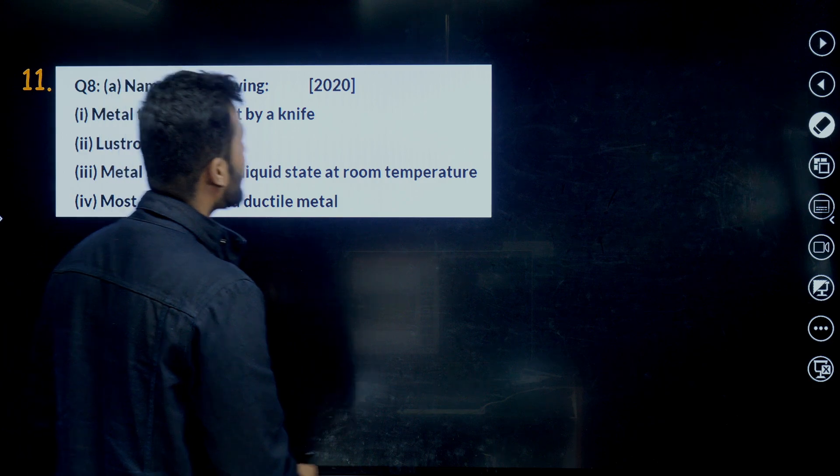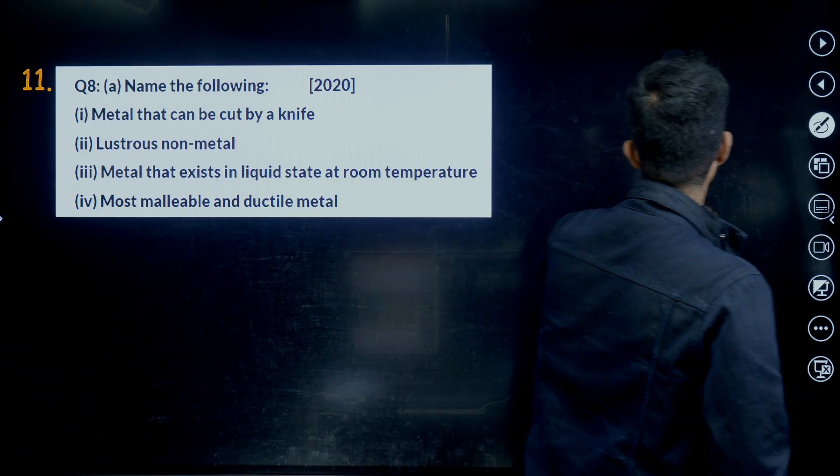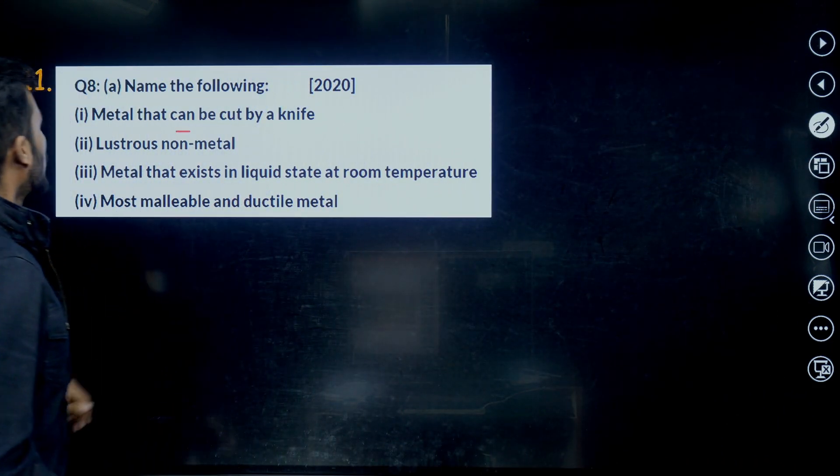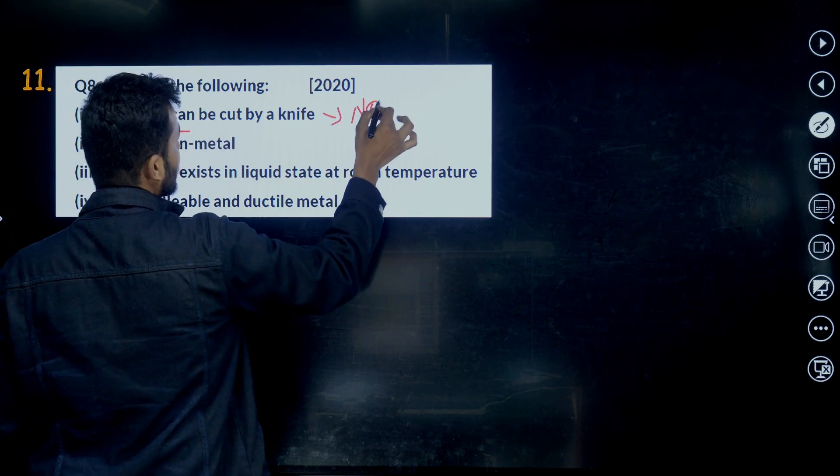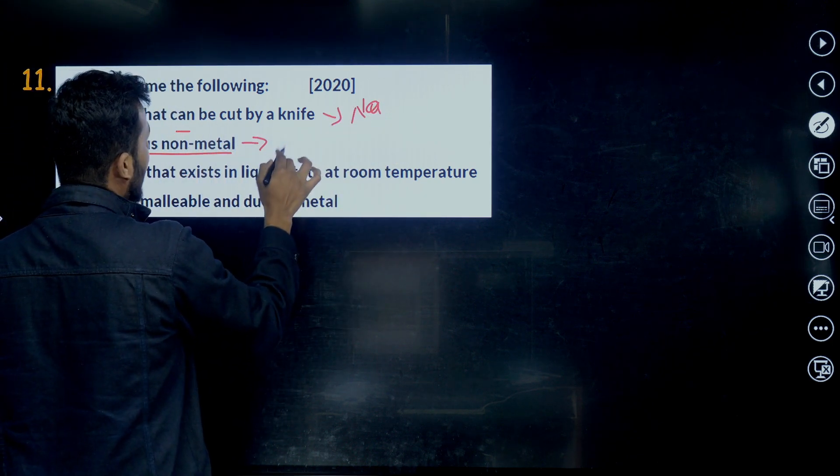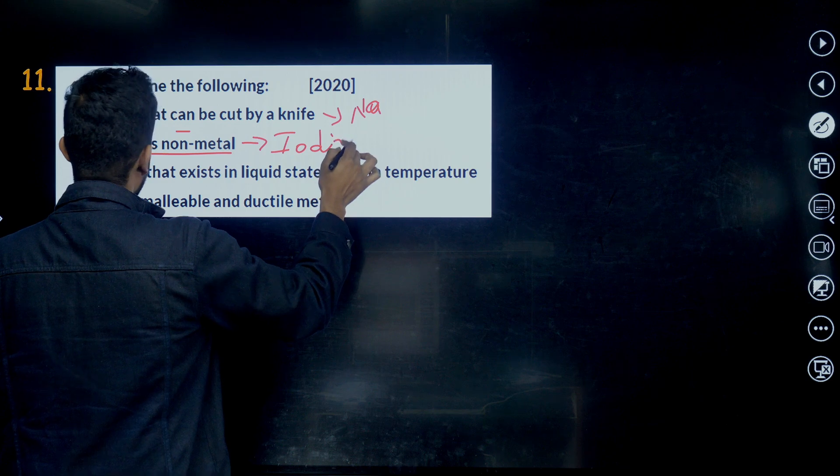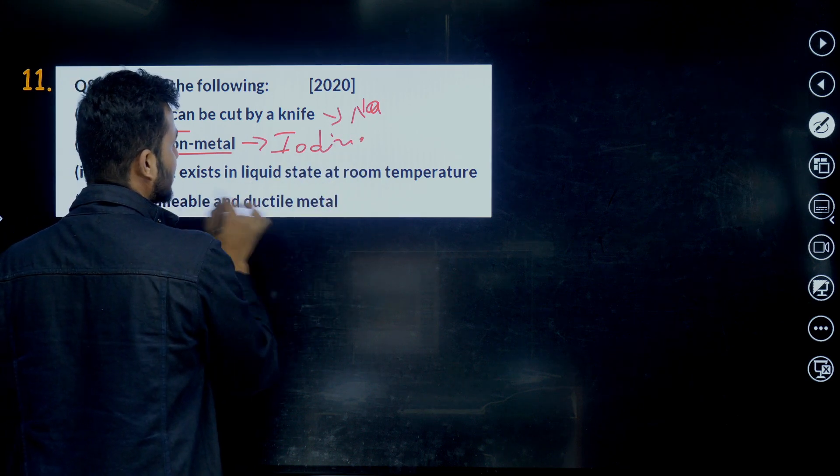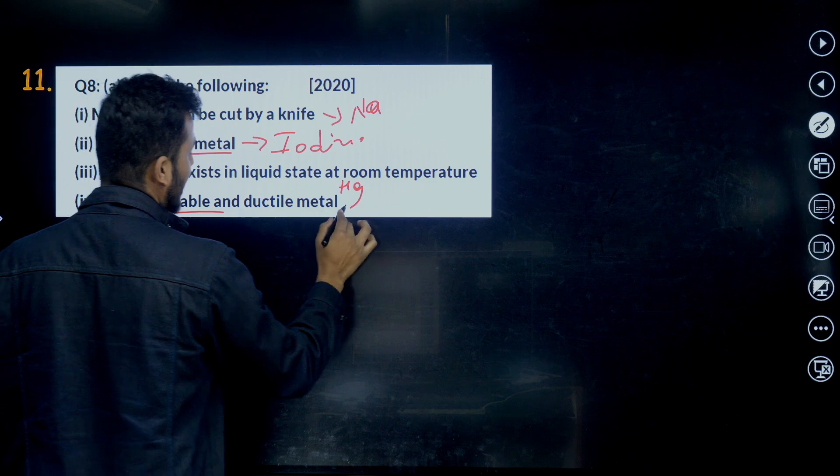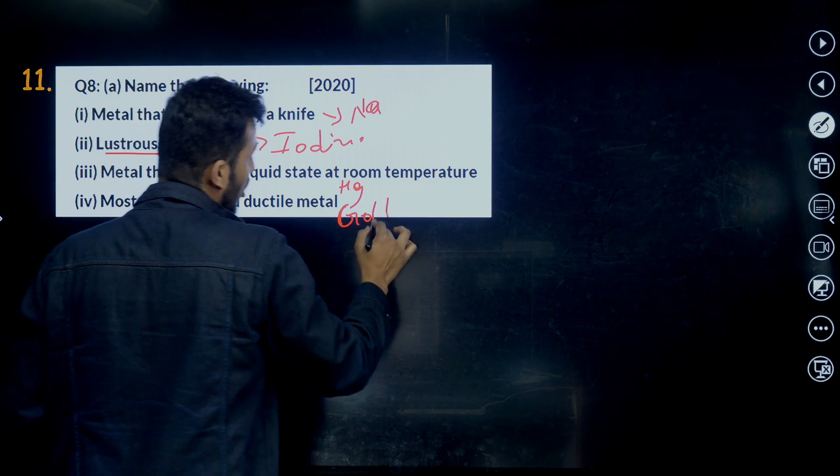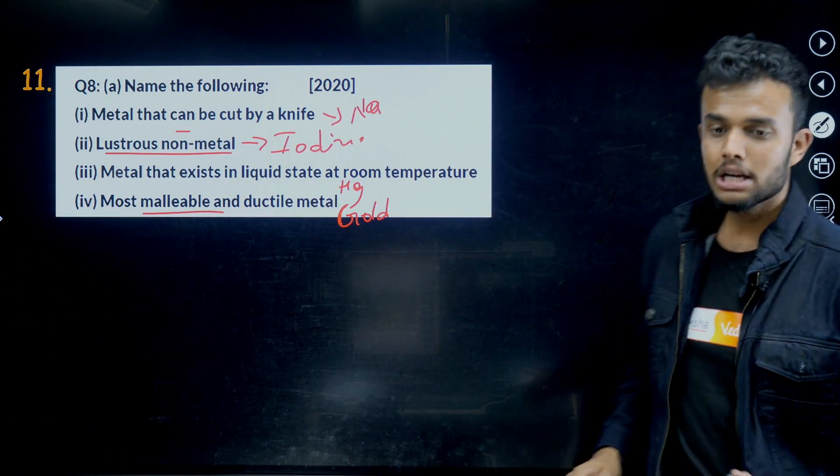Name the following. Come on, fast. Name the following. Metal that can be cut by knife - sodium metal, sodium, lithium. Lustrous non-metal - iodine. Metal that exists in liquid state at room temperature - mercury. Most malleable and ductile - gold. Gold is the most malleable and ductile metal.